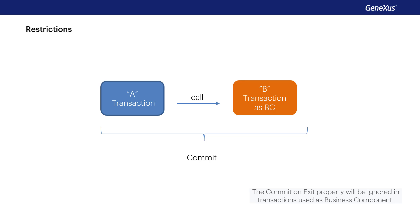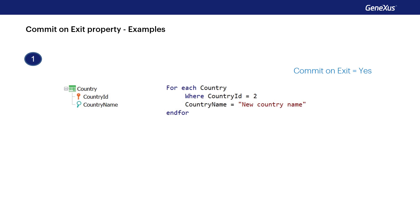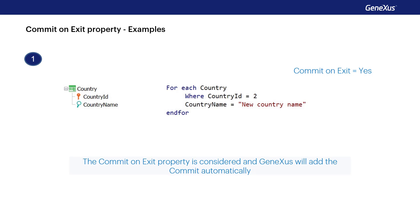We'll look at four specific examples and analyze the behavior. In the first example, suppose there's a Country transaction and the source of the procedure shown. The procedure has the Commit on Exit property set to yes. Since the foreach performs an update on the database, GeneXus will add the commit automatically and the country with Country ID 2 will be updated with its new name.